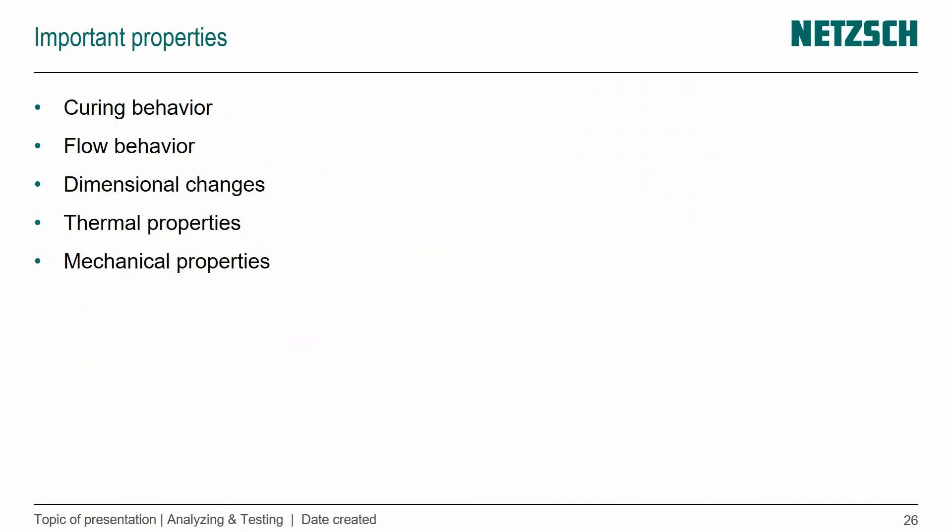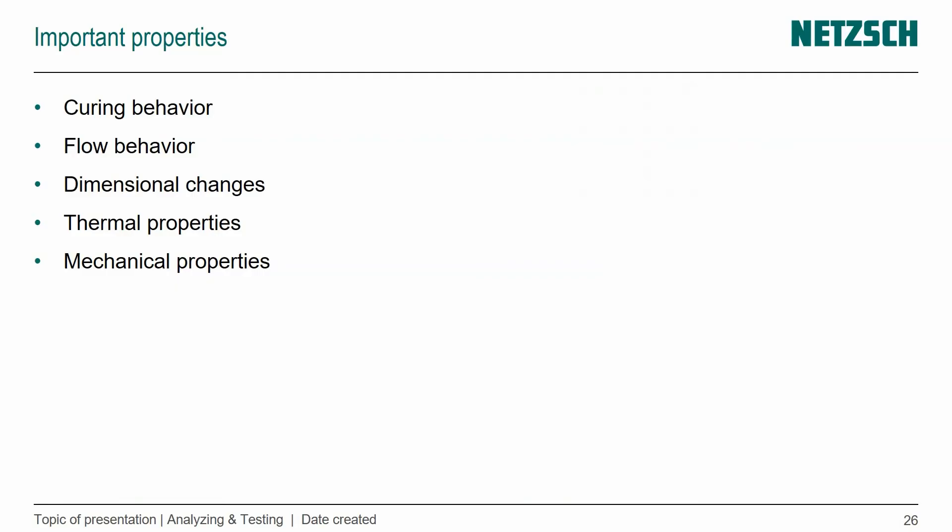So important properties of the thermosets or thermosetting materials are the curing behavior. So there is no melting and crystallization, as I said, not reversible, but how we come from a liquid to a solid, that curing behavior is very interesting. The same with the flow behavior. I mentioned before that it's a lower viscosity material, so it can flow in smaller gaps without as much pressure. That's also very interesting. The dimensional changes, because of the chemical reaction, you have the chemical shrinkage that's occurring.